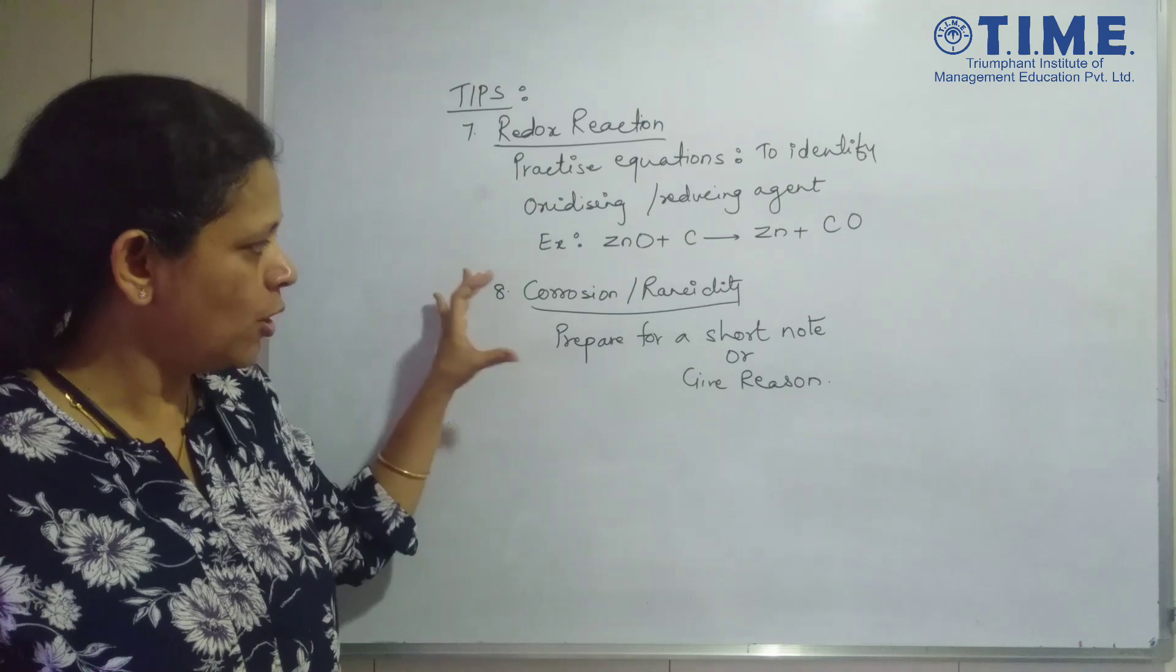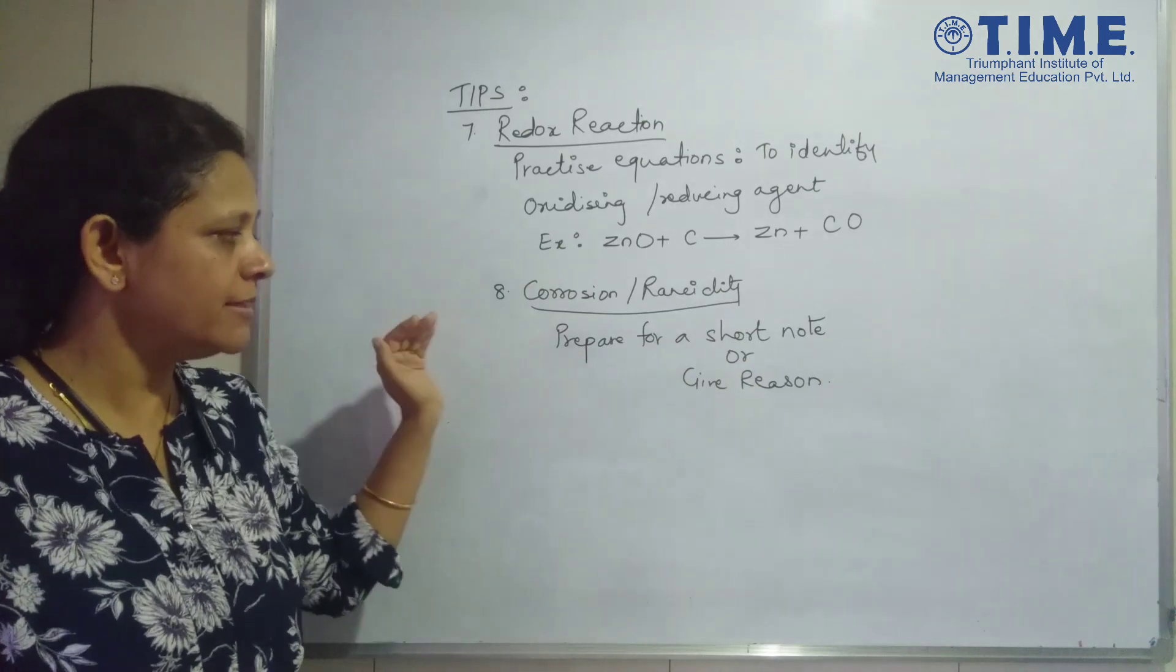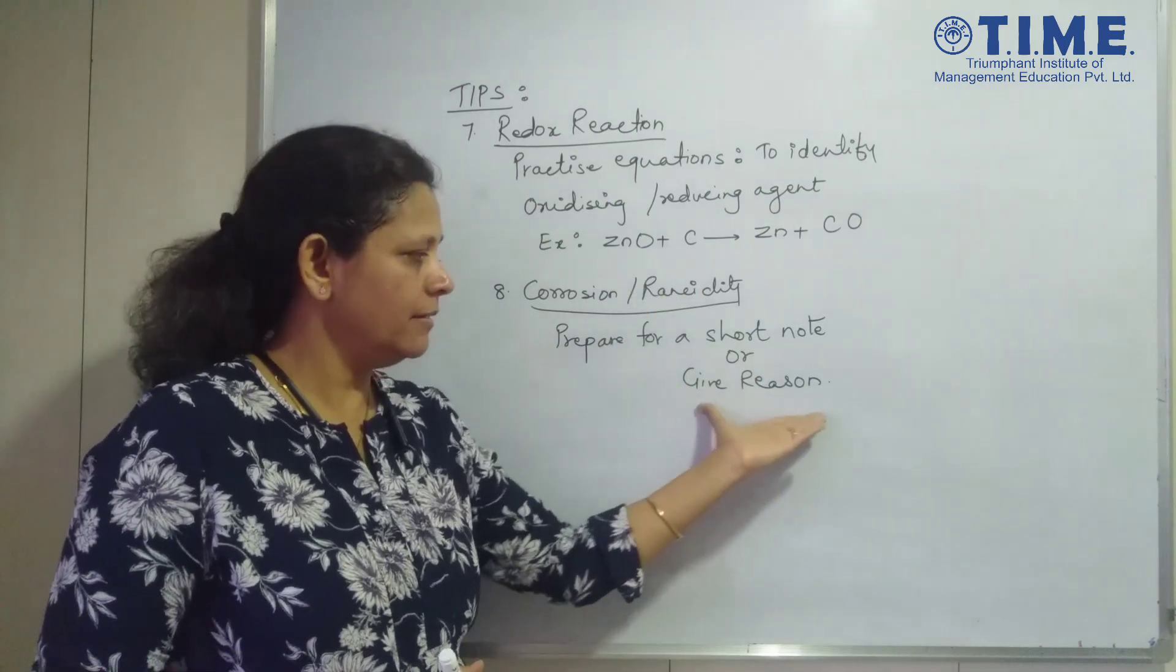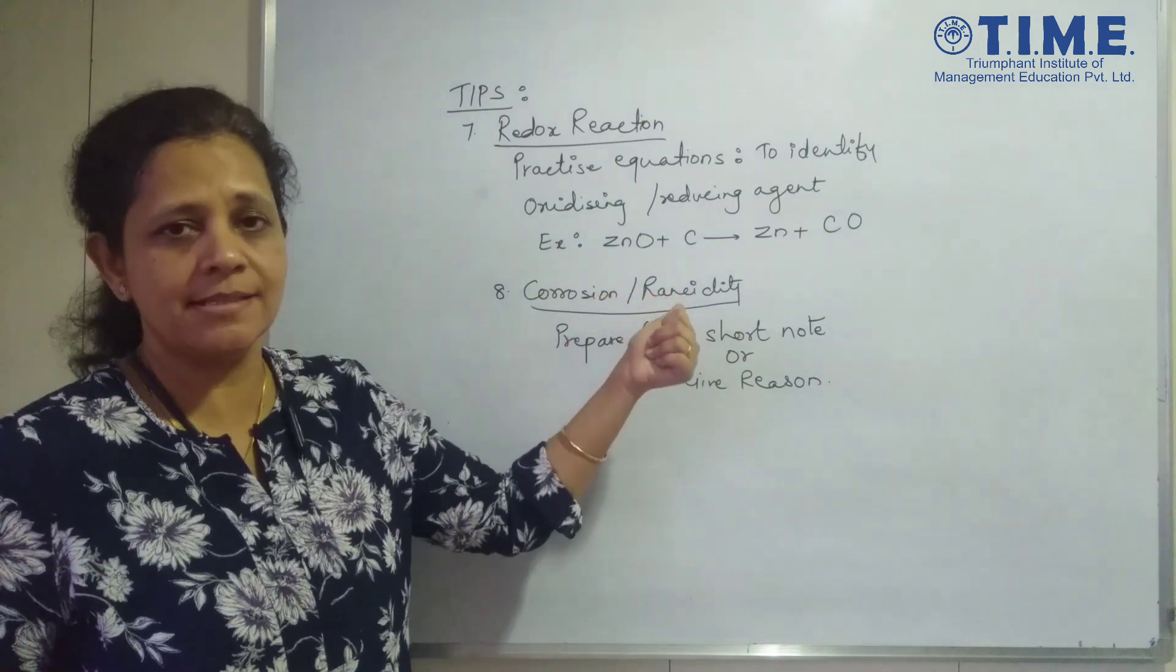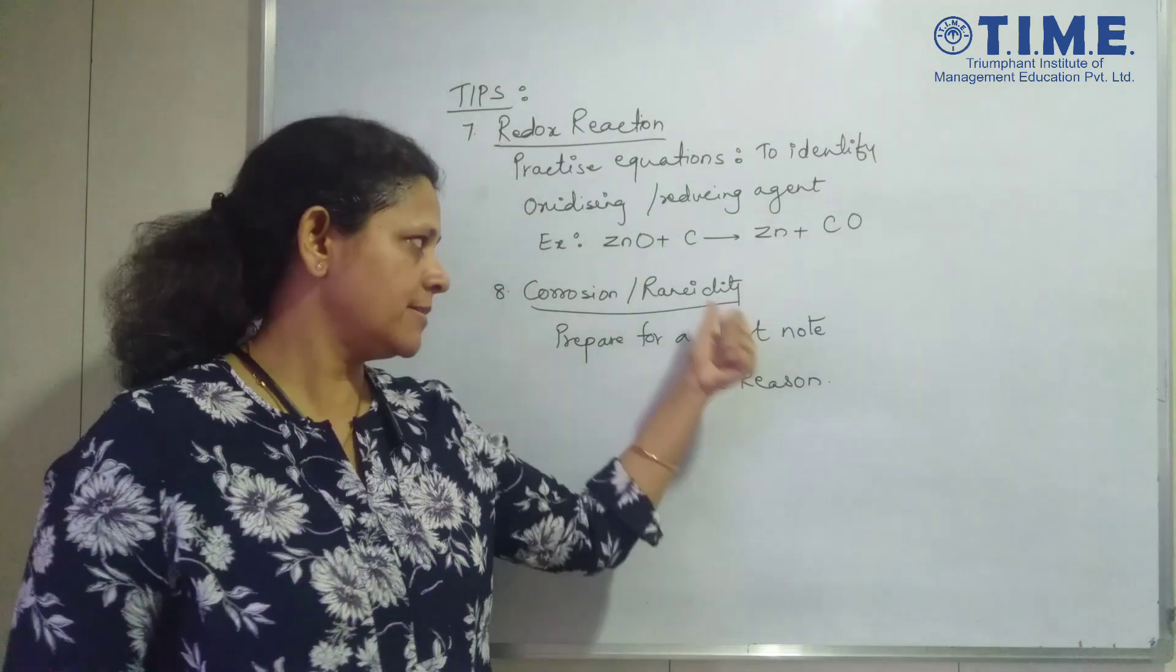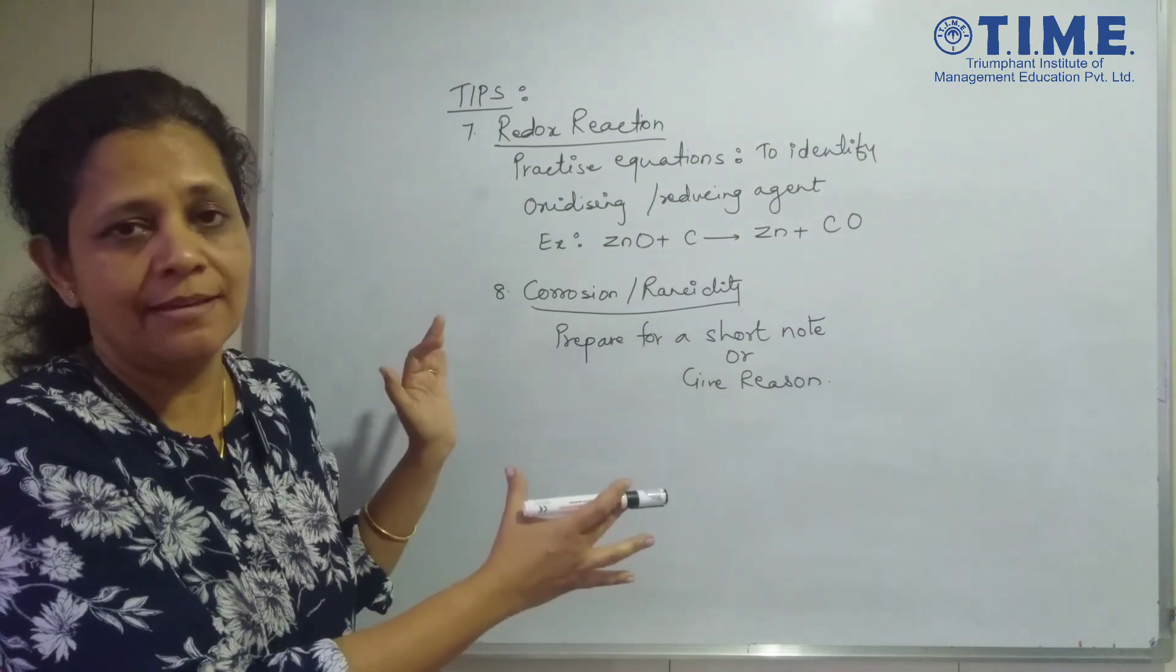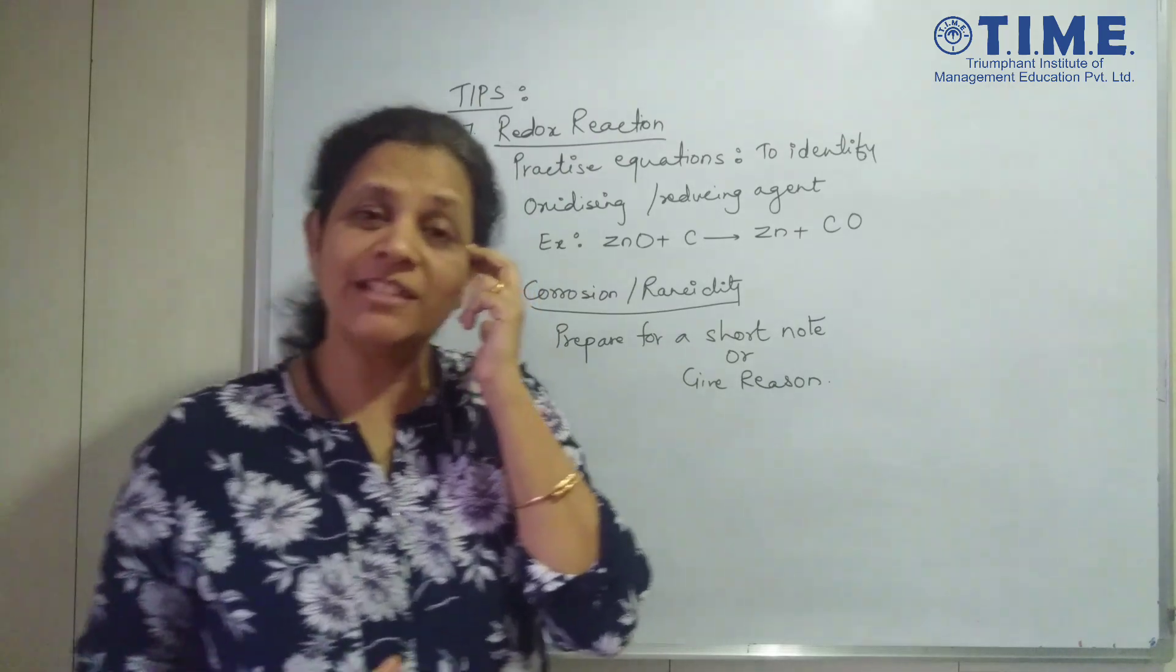And the last small paragraph that you have is based on the corrosion or rancidity. The question is prepare yourself for a short note on corrosion. What is corrosion and what is rancidity? There can be a small give reason two mark question that can be expected on rancidity, why your potato chips bags are flushed with nitrogen. That is to prevent the rancidity of fats. So these are my eight points or tips you can say to focus on the entire chapter.